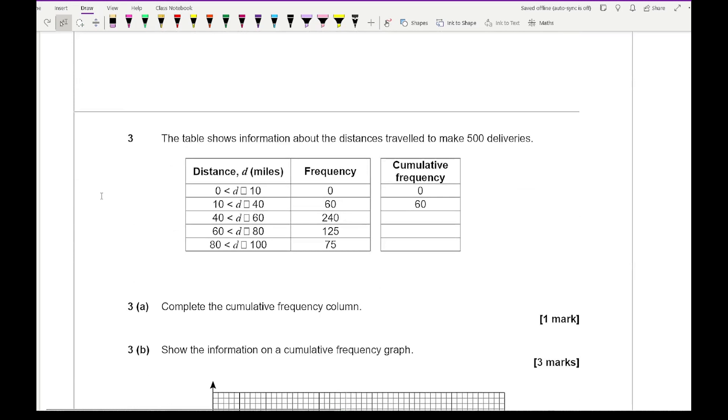Moving on to question 3, the table shows information about distances traveled to make 500 deliveries. To complete the cumulative frequency column, we just do a running total. The missing numbers are going to be 300, then 425, and then we add 75 to make 500.